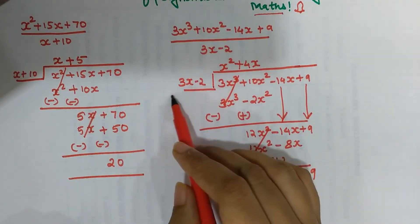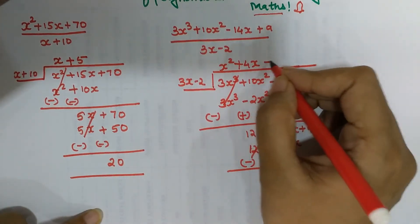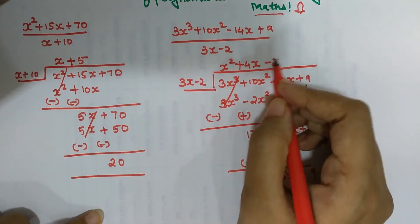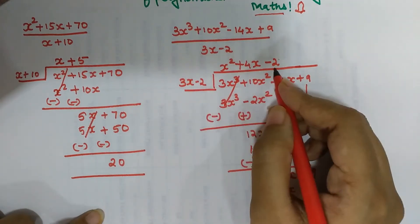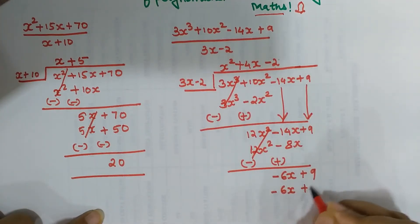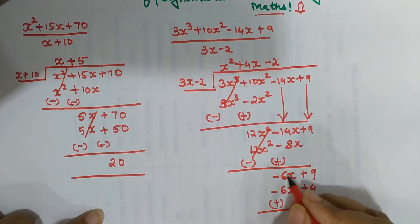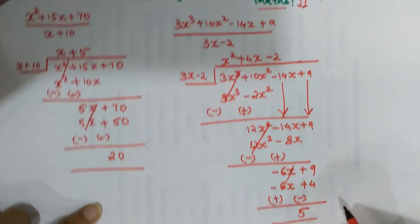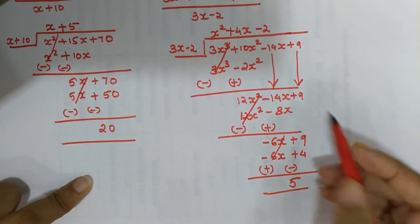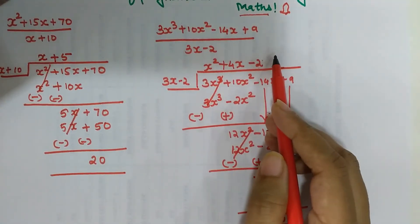Since I have 3x in the divisor and I want negative 6x, I will multiply by negative 2. Negative 2 multiplied by 3x gives minus 6x, and negative 2 multiplied by negative 2 gives plus 4. The signs change: minus 6x plus 6x gives 0, and 9 minus 4 gives a remainder of 5. That completes the division of this particular polynomial.